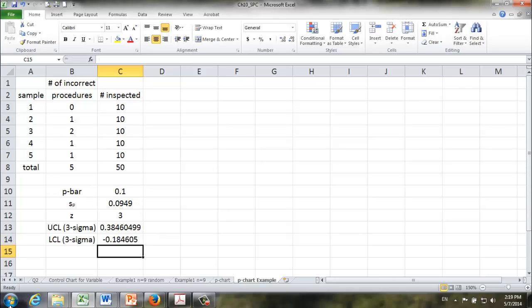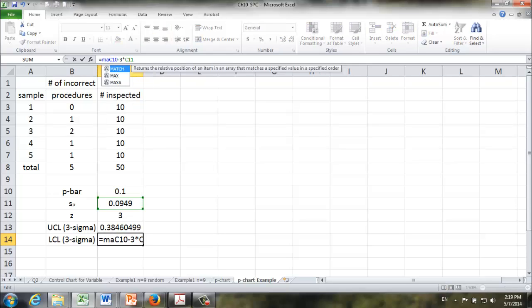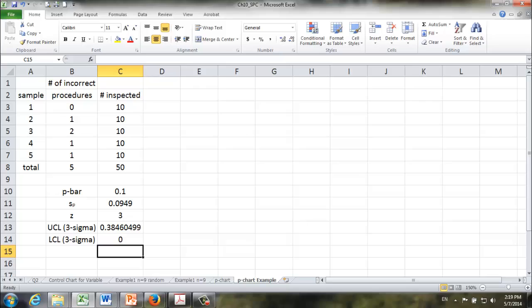Now we have a problem here. The lower control limit is a negative number, which doesn't make much sense because we are dealing with the defective ratio. So here's what we are going to do. We are going to use the maximum number between 0 and the number we calculated earlier. Whenever the lower control limit is a negative number, we make it 0, so 0% defective ratio.